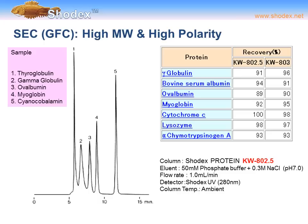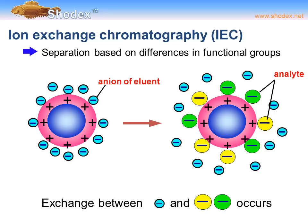SHODEX also offers the KW series for traditional silica-based separations of high molecular weight, high polarity compounds. In this example, we separate five compounds including thyroglobulin and gamma-globulin, and the screen shows not only the separation but also the percent recovery comparing a KW802.5 versus a KW803 column.